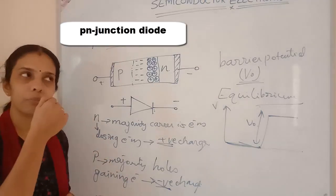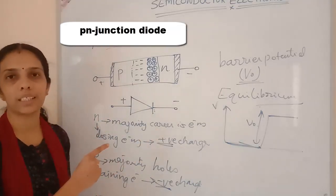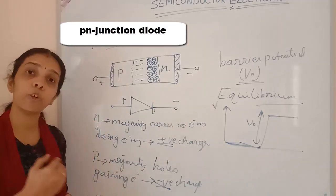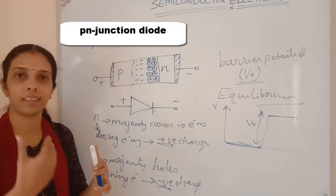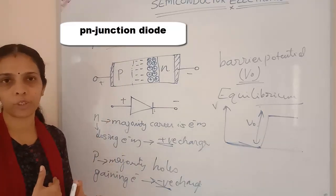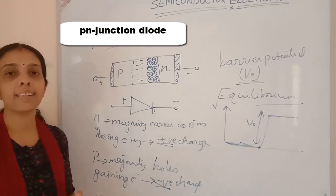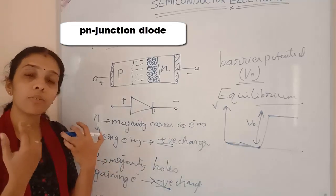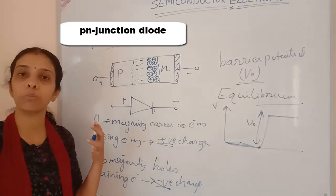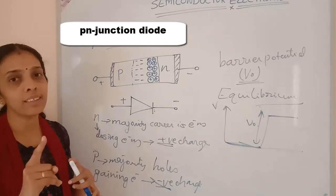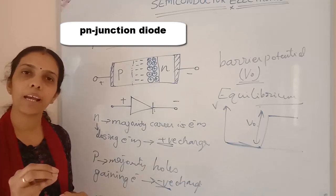In forward biasing, current can flow more easily through the depletion region due to external potential. If the applied voltage instead supports and increases the depletion region, making it impossible for electrons to cross, that is called reverse biasing. So there are two types of biasing: forward biasing and reverse biasing.